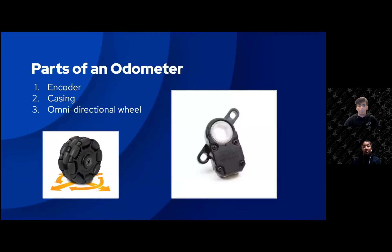There are three main parts of an odometer: the encoder, the casing to which the encoder is attached, and an omnidirectional wheel. When these three parts come together, the whole assembly is placed at the bottom of the robot. As the wheel spins, the encoder, which is attached to the wheel, will spin as well and translate this into a distance.